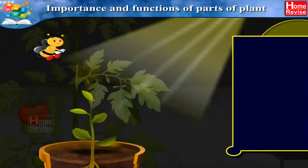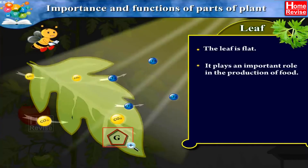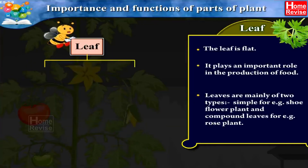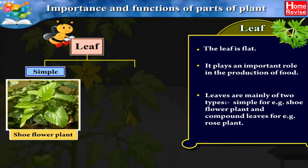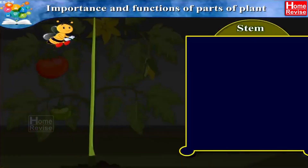The second part of the plant is the leaf. The leaf is flat and plays an important role in the production of food. Leaves are mainly of two types: simple leaves, for example the shoe flower plant, and compound leaves, for example the rose plant.